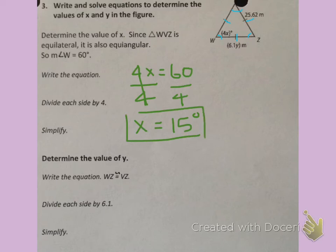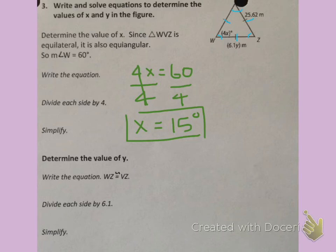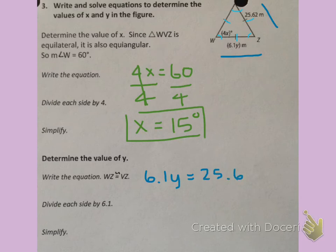Now we need to find the value of Y. Referring back to the figure, I see that 6.1Y is listed as one of the sides, and I'm also given a measurement of one of the other sides. Because this is an equilateral triangle, all of the sides are congruent — meaning they're all equal to each other. So side WZ is congruent to side VZ, and I can write 6.1Y equals 25.62.